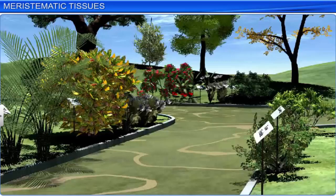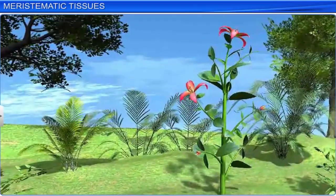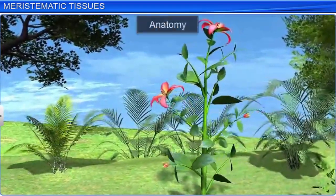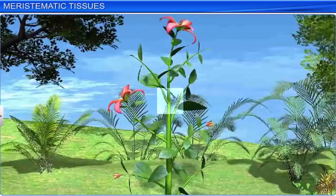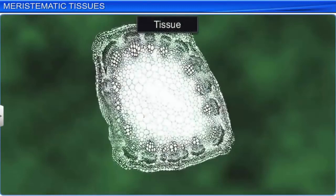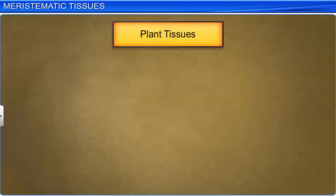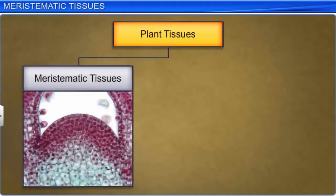We come across several varieties of plants every day. The internal structures of these plants have some similarities and some differences. The study of the internal structure of plants is known as anatomy. Let's understand the anatomy of a flowering plant. A plant is formed of different types of tissues. Tissue refers to a group of cells that have a similar structure and perform the same function. There are two main types of plant tissues: meristematic tissues and permanent tissues.